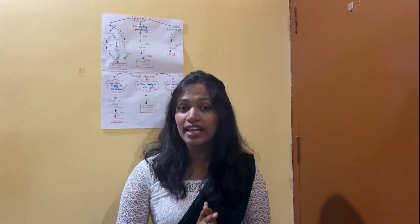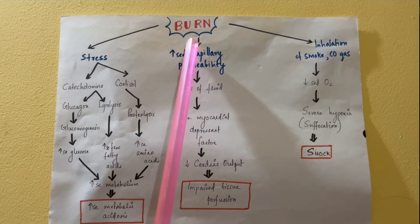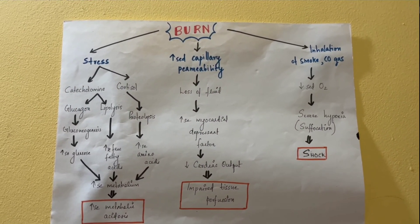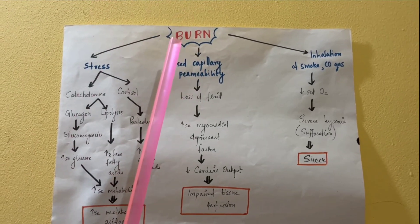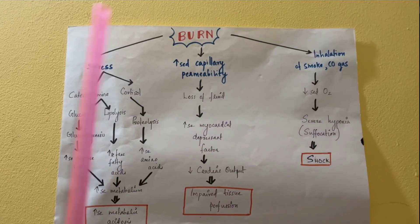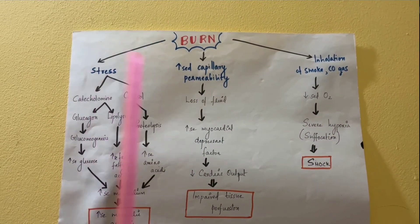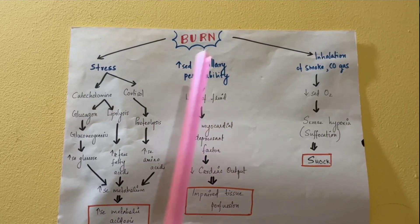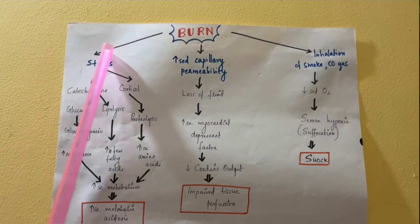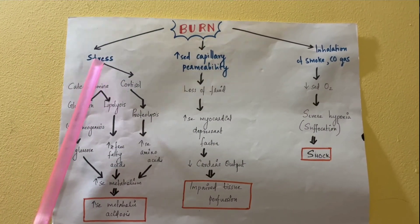Hello guys, welcome back to Meromedics. In this video we'll be discussing the pathophysiology of burns. Burns involve breakage of tissues, specifically the skin. We'll talk about three main things that happen: stress response, increased capillary permeability, and inhalation of smoke and carbon monoxide gas.